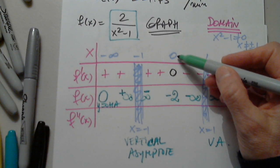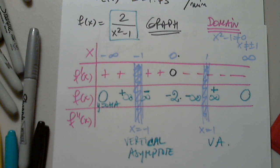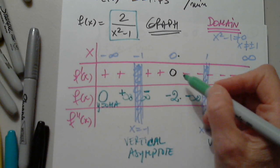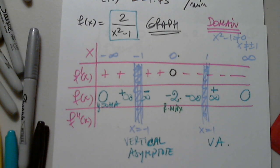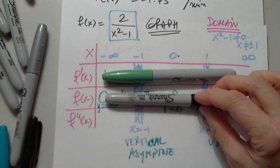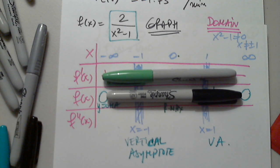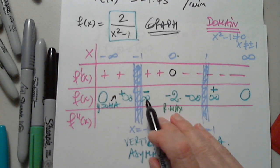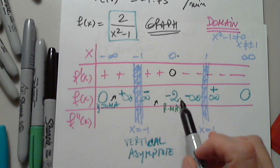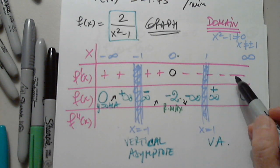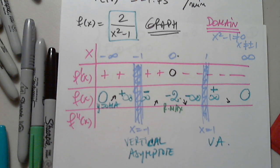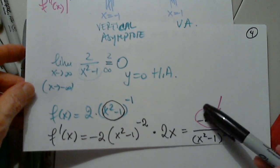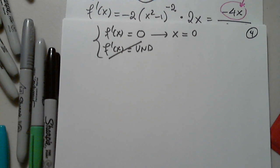Since the derivative goes from positive to negative at x equals 0, the point (0, negative 2) is a relative maximum. Let's verify the table makes sense: increasing on the intervals approaching 0, decreasing after — everything checks out, so we can move to the second derivative.